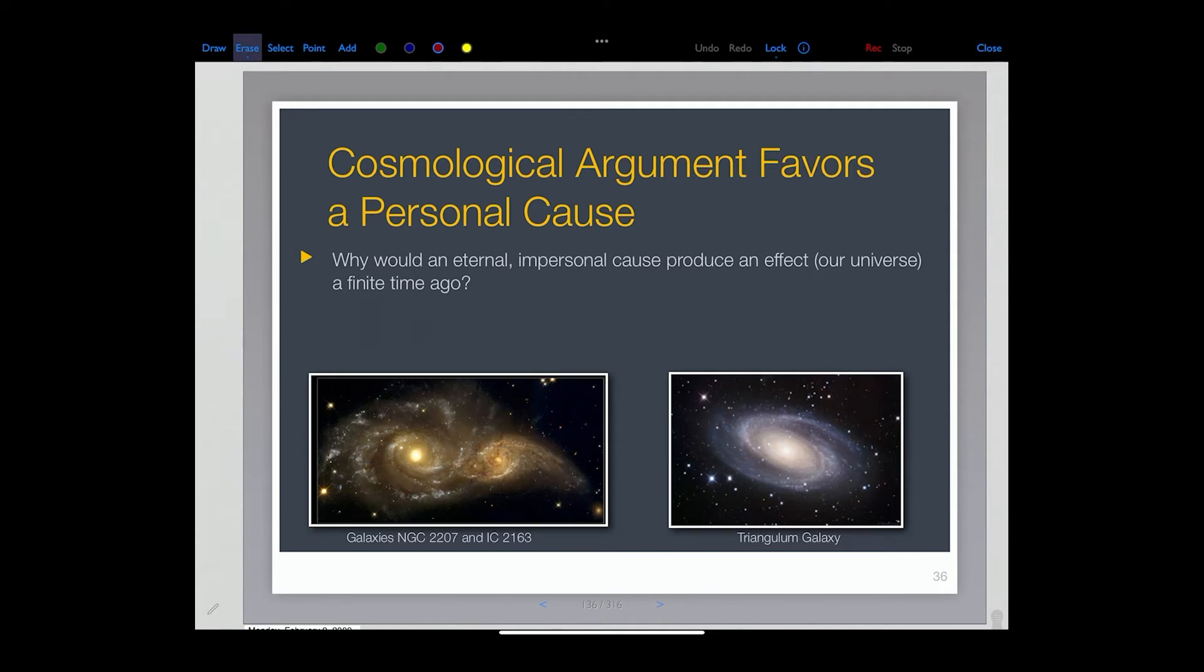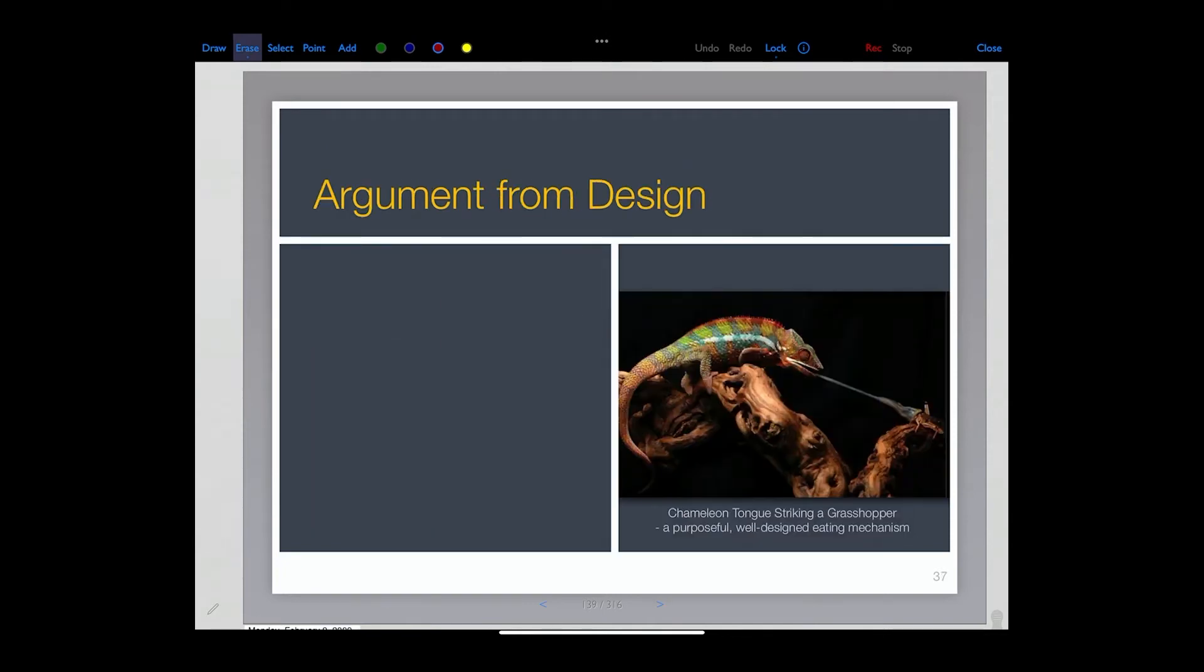So these are causes and the effect cannot be greater than the cause. And this is what we're trying to say. And so the cosmological argument favors the personal causes we've seen. Because why would an eternal impersonal cause produce an effect of finite time? And why did he do that? What kept the cause from producing the effect? So there's mysteries about that. Impersonal causes don't have an act of a will. Only a personal being could make a choice to create the universe a limited time ago.